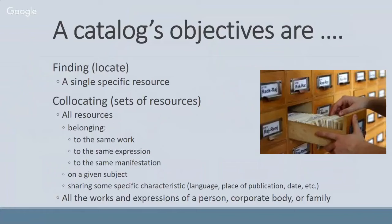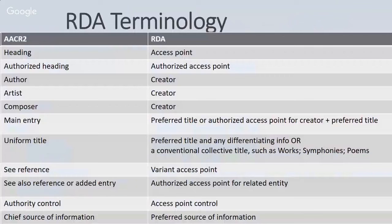One of the changes under RDA is the terminology that we catalogers use. Instead of headings, with RDA they talk about access points. And instead of talking about the author, it's the creator. Given that libraries hold materials beyond just books, moving away from book-centric terminology makes sense. An access point also follows through with the fact that we have a more online world — we have access points rather than card catalog headings. Again, a change in how we think about what we do.